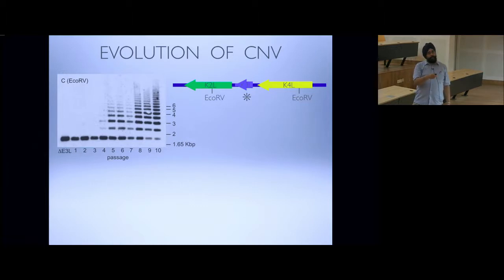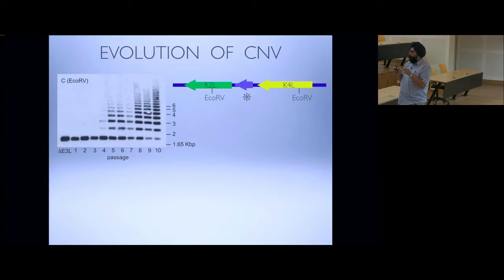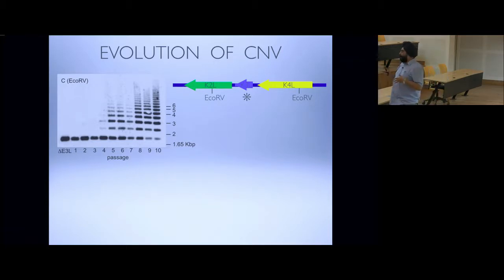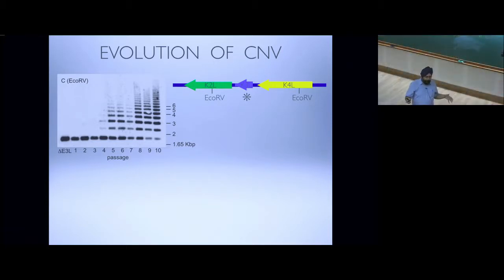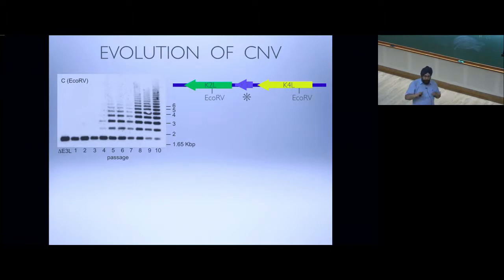The initial duplication of the K3L gene is the rate-limiting step — it's the stochastic event that selection needs to act on. As soon as that occurs, you get this rapid amplification whereby by passage 10, some of these viruses have undergone almost a 50-fold expansion. The average is about four to five, but within the population are viruses that have undergone almost a 10% expansion of their already very large genomes, just from K3L copy number changes.